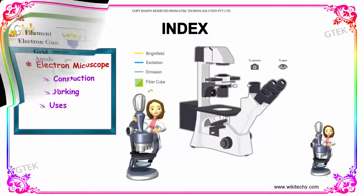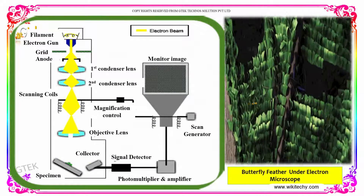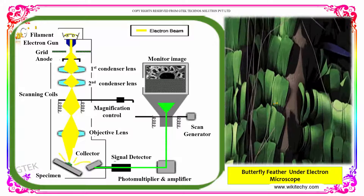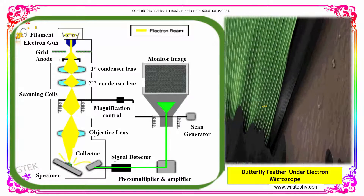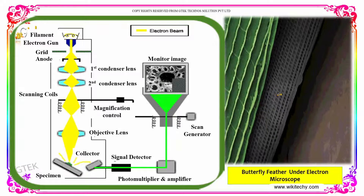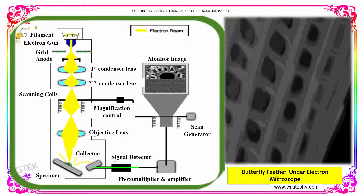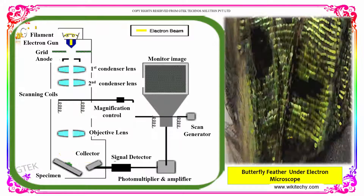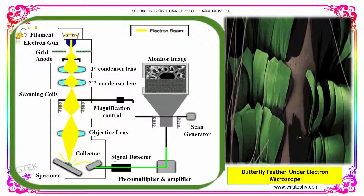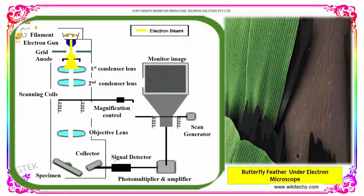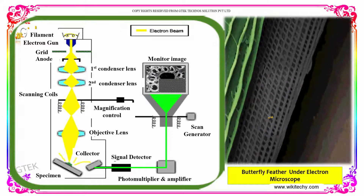The electron microscope is a much more complicated and also useful device to focus on a particular object. Here is a picture showing a butterfly feather seen under the electron microscope. You are able to see the feather here. This is how the magnification of the electron microscope is.